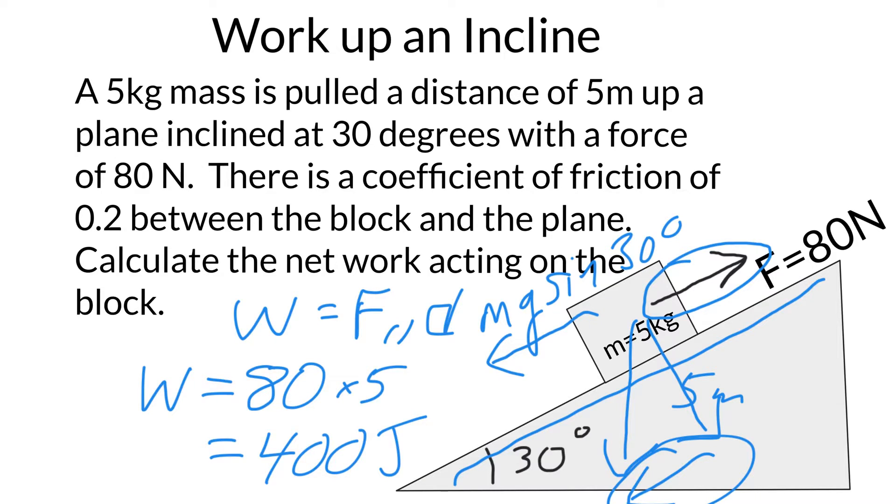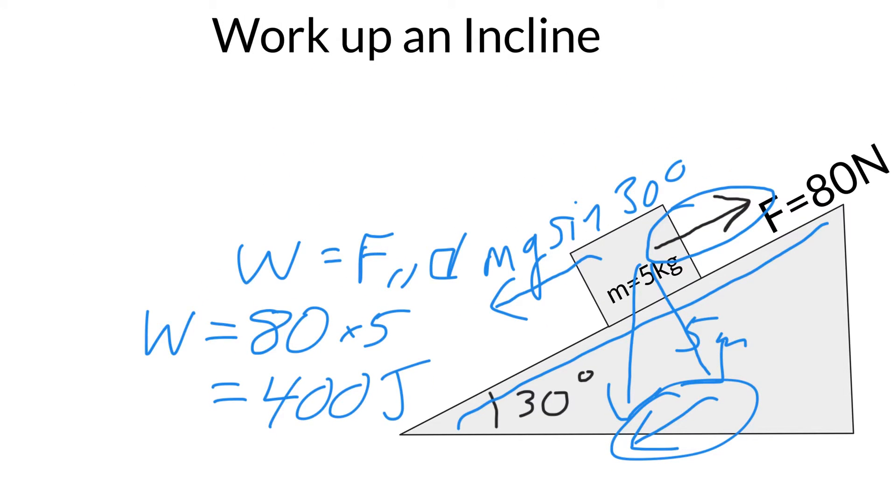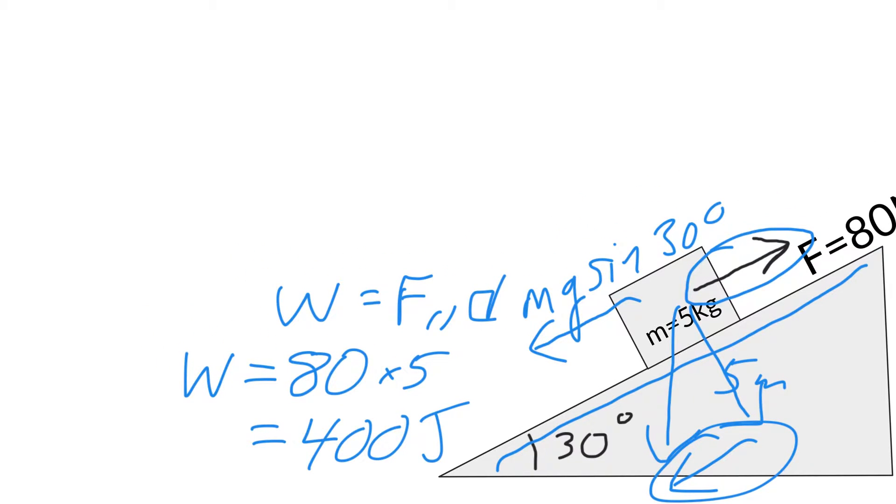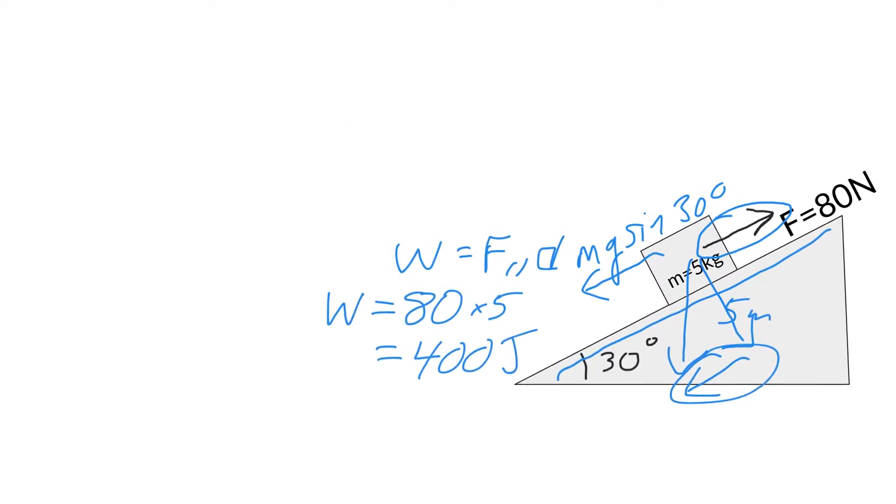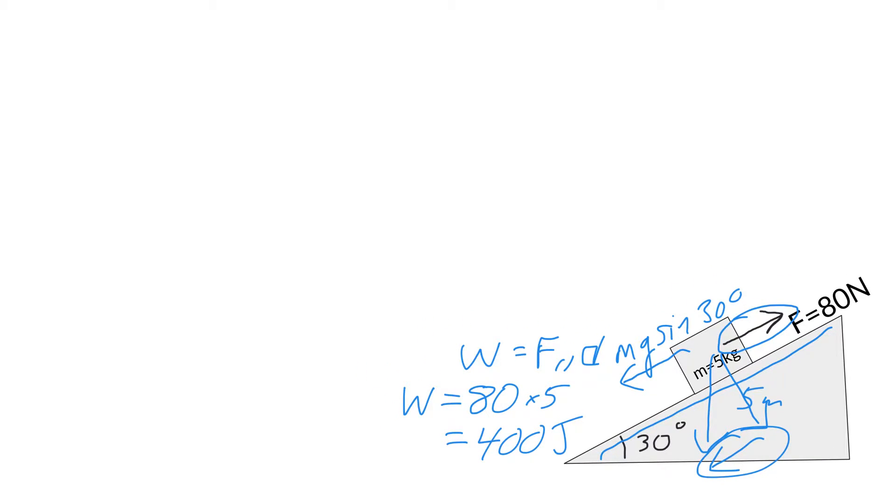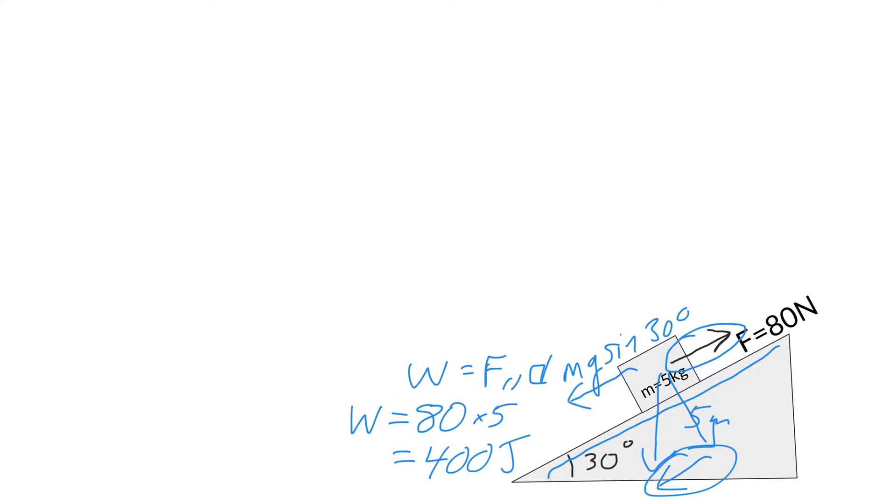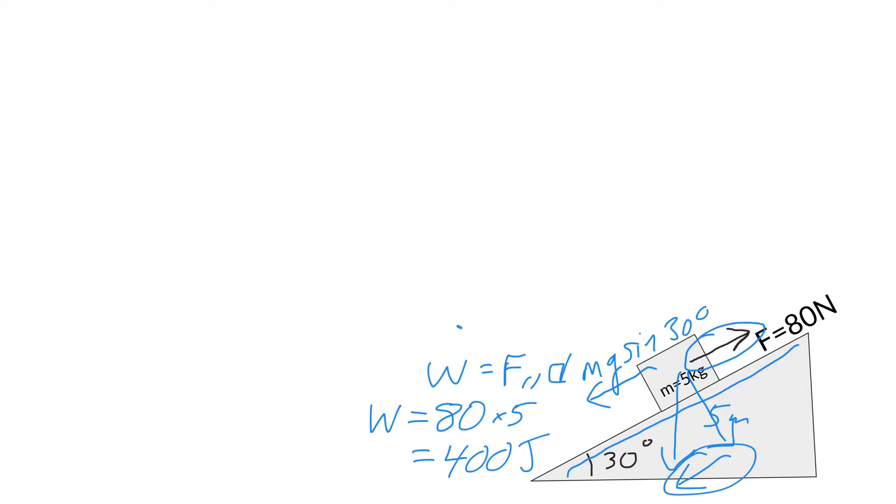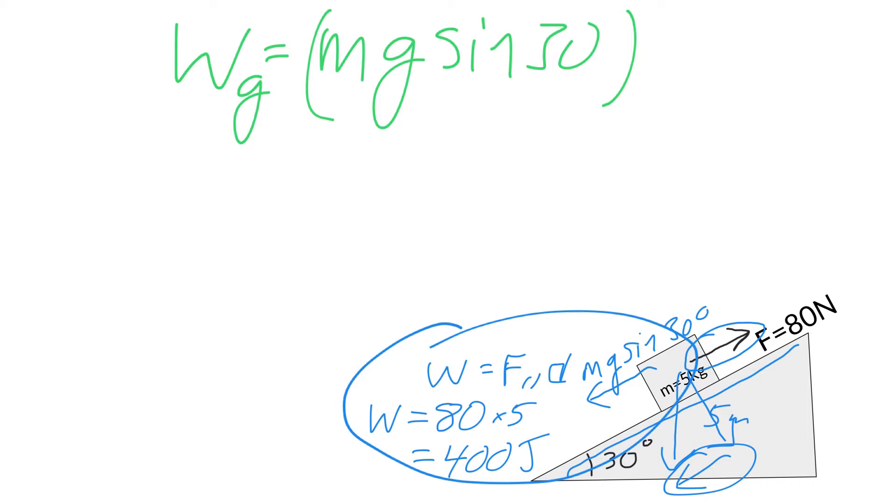Okay, let's go ahead and clean this up a little bit. Let's move this, let's just move that out of the way. So the first work was the work done by me pulling it up the ramp, right? That's 400. And then we're going to say there's some work being done by gravity. So say there's work being done by gravity. And this is the work coming down the ramp. So we're going to go mg sine theta, or sine 30. And again, we're going to multiply by the distance, 5 meters.